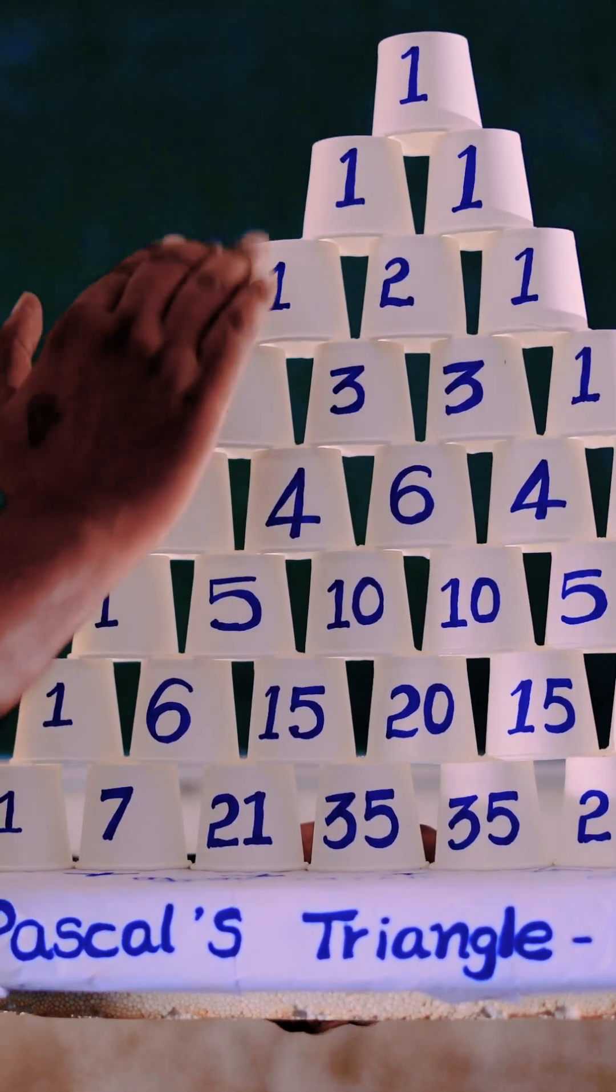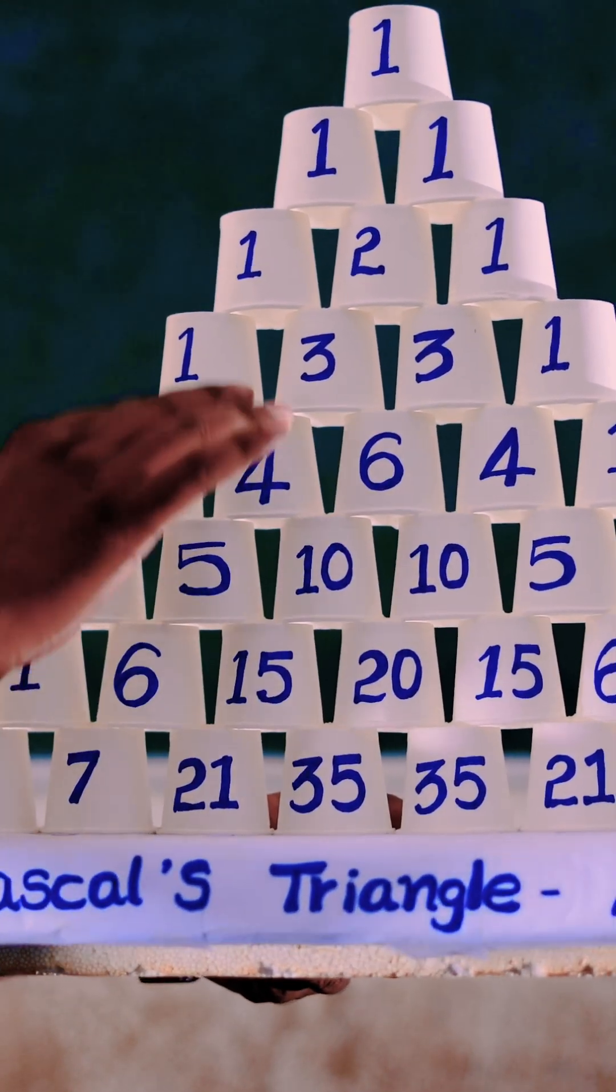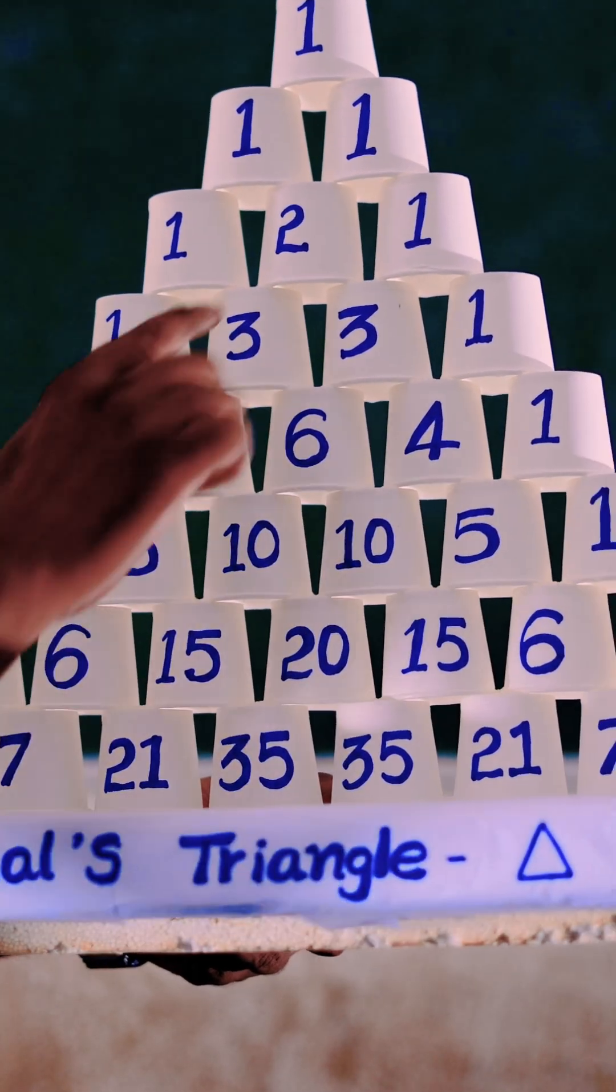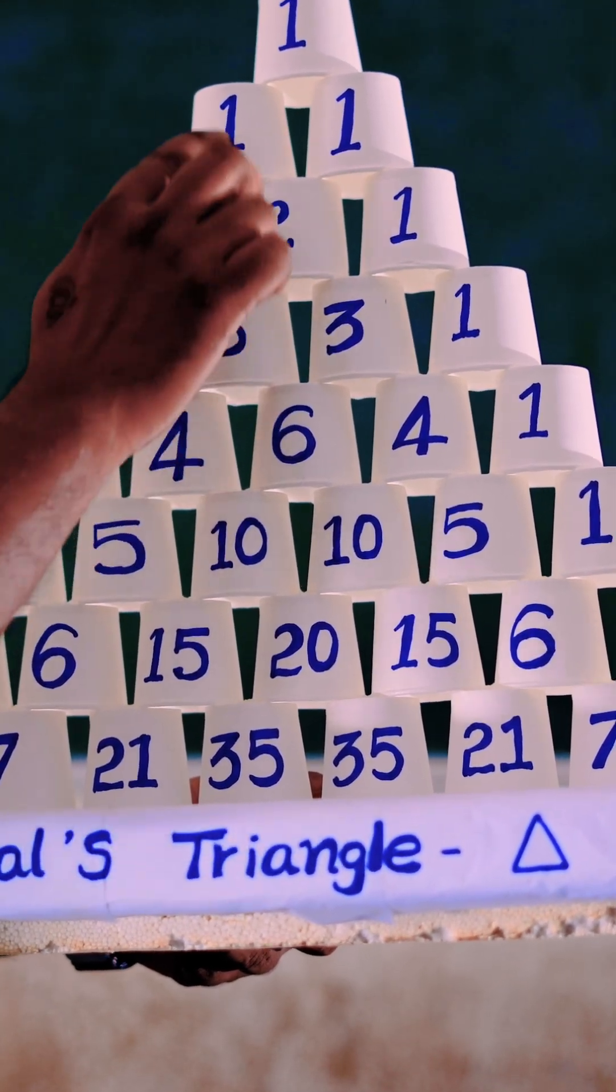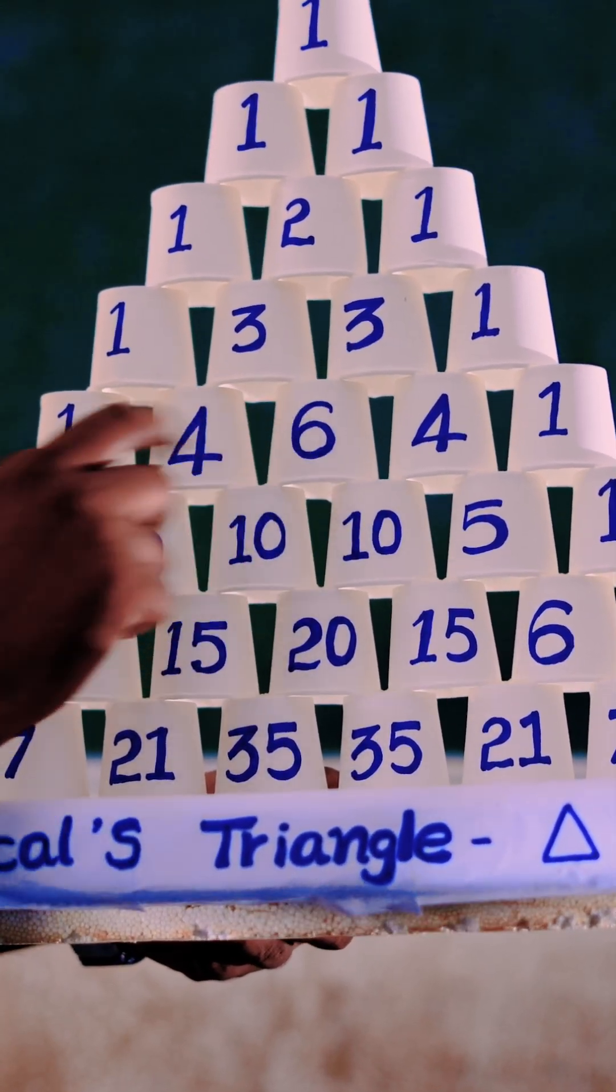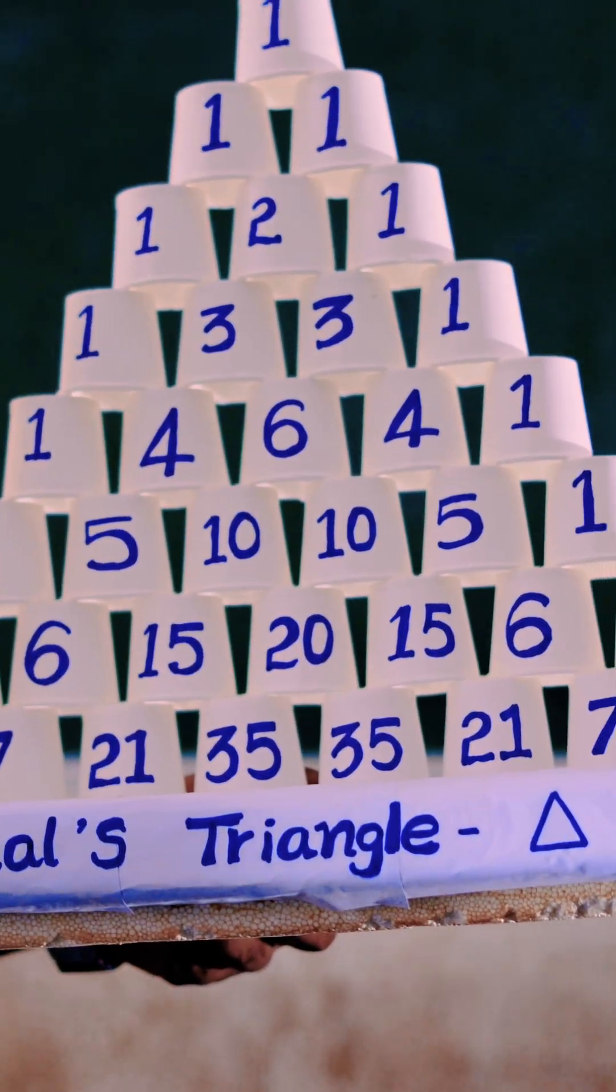First row, start with 1. Add more rows like how many you need. In every row, beginning and ending with 1 only. The middle numbers are always sum of the above two numbers. Example: 1 plus 1 is 2, 3 plus 3 is 6, 6 plus 4 is 10. Pascal Triangle has many math concepts. Let's explore a few.